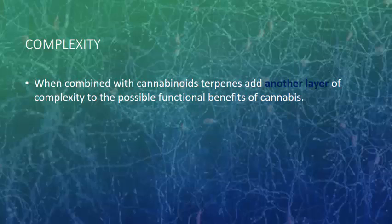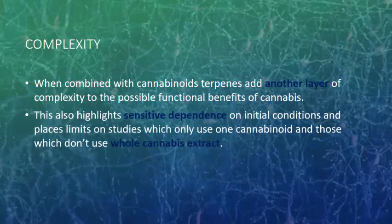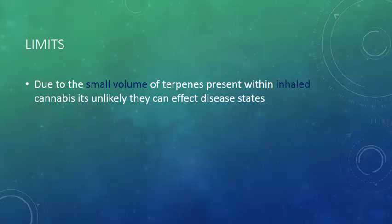When you combine cannabinoids and terpenes, especially in the brain, you've got another layer of complexity, and so the possible functional benefits of cannabis are expanded upon. This also highlights sensitive dependence on initial conditions and places limits on studies which only use one cannabinoid and those that don't use whole cannabis extract. If you are not looking at the complete terpene profile, you're going to get different mental effects, and the consumer will have a different emergent experience based on this.